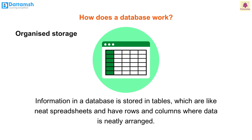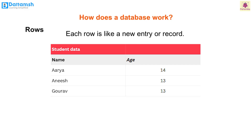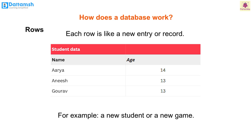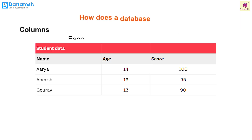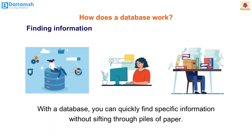How does a database work? Information in a database is stored in tables, which are like neat spreadsheets with rows and columns where data is neatly arranged. Rows: each row is like a new entry or record, for example a new student or a new game. Columns: each column contains specific details, for example names, ages, or scores.